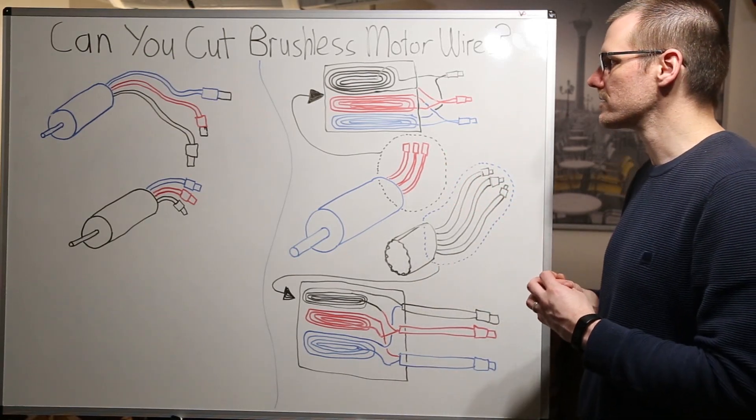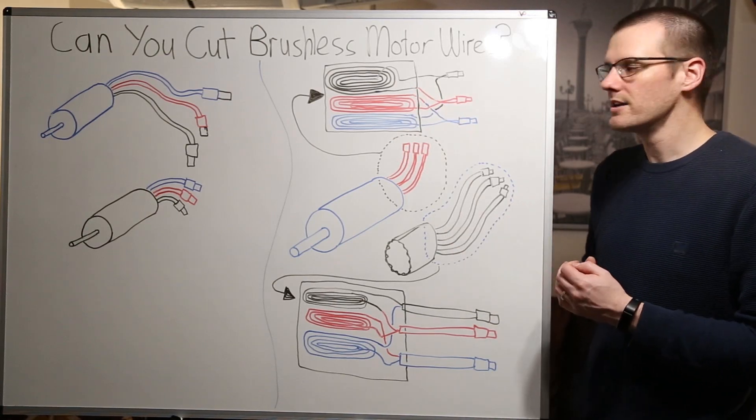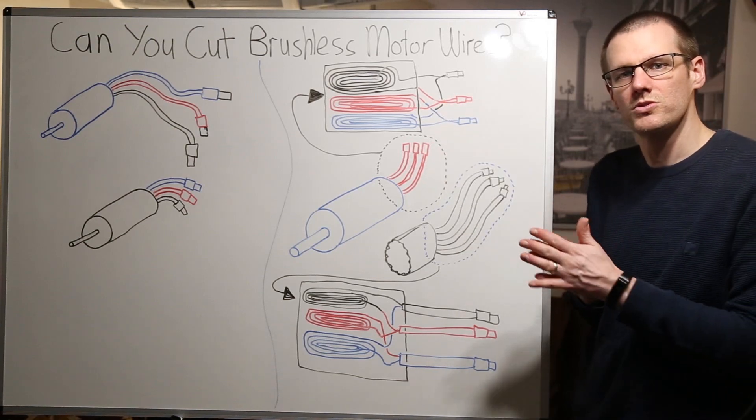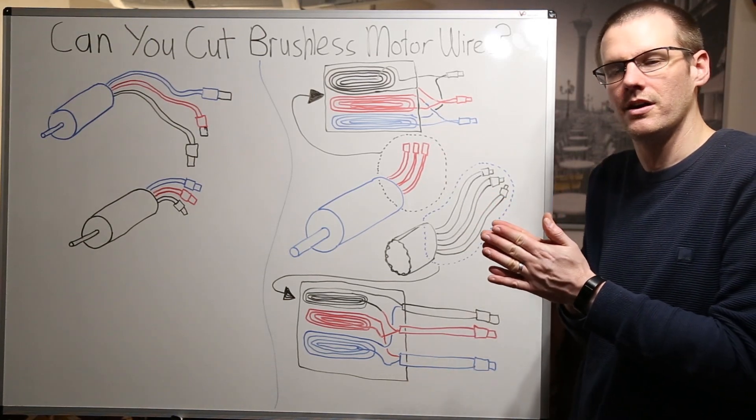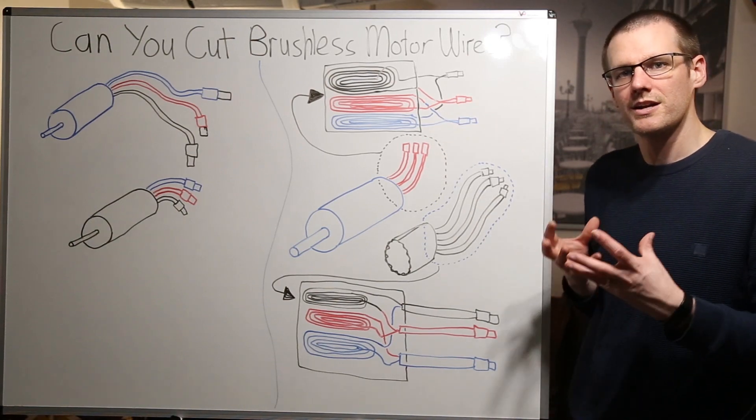Now what you'll notice is these connections don't actually terminate here. They get terminated right at the connector. You can see where it crosses. This represents where those two wires would have to be soldered together and then once they're soldered together here you can then go ahead and put a connector on them.